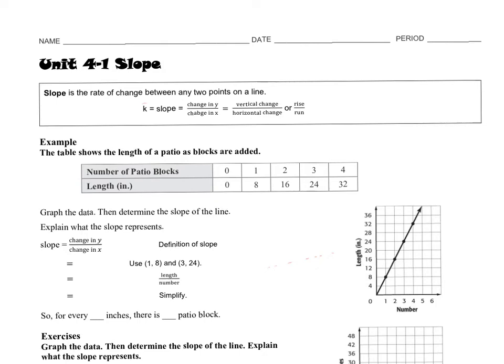So slope is the rate of change between any two points on a line. That's all the things we talked about: the constant of proportionality, the slope, the change in y over change in x, the vertical change over horizontal change, or rise over run.